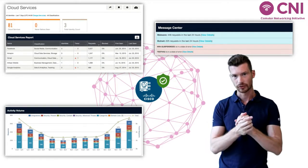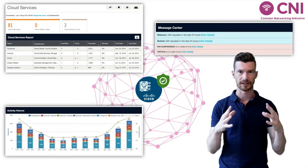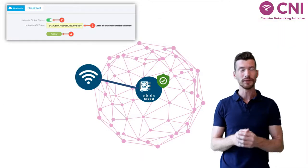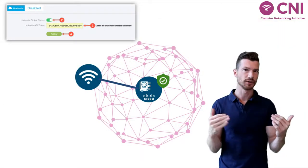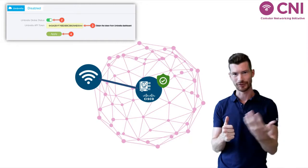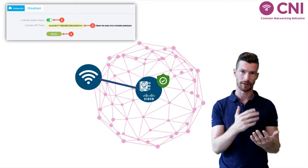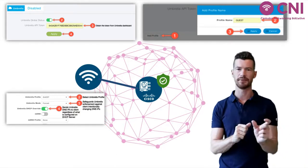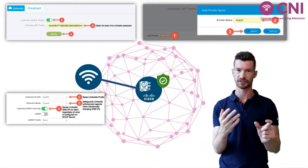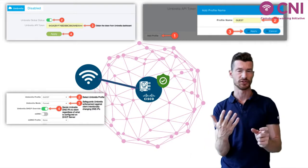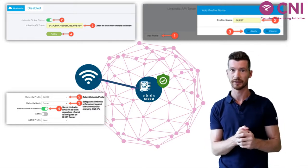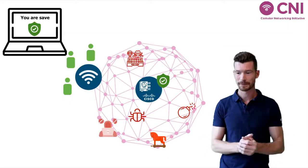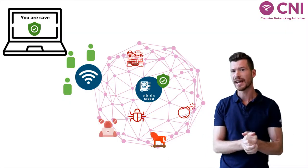Creating this security layer on top of your wireless network is easy — and that's the cool thing. You go into your controller dashboard, enable Umbrella, enter the token of your Umbrella portal, and just allow the network to override the DNS IP of your DNS requests. You want to use Cisco's DNS instead of whatever was predefined in the network. And that's it. Protecting a network doesn't have to be complex.